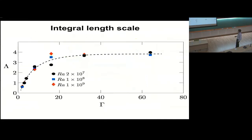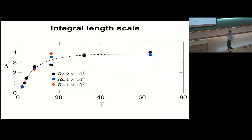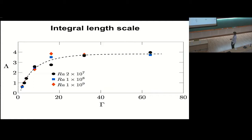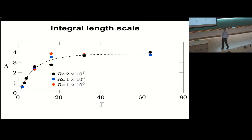We quantified this more by looking at the integral length scale as a function of aspect ratio for all available cases. This converges to roughly an integral length scale of four — roughly half the full structure size — which corresponds to the size of one red blob. The value converges when approaching roughly aspect ratio 32. At aspect ratio 16 there is uncertainty: it could be that the system is still close to the aspect ratio 8 regime for lower Rayleigh numbers, or transitioning. It seems you really need aspect ratio 32 to fully converge the structure size.